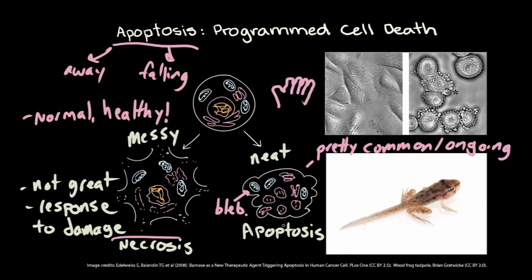So what is this image here? That's basically showing the same thing as the line diagram: healthy cells in the left panel, and then blebby cells undergoing apoptosis in the right panel. They're having all of their cell components repackaged into garbage bags — or recycling bags — to be sent off to other cells where their components can be reused. Exactly.